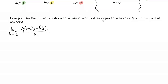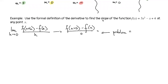If we just plug in zero for H right now, what happens to my fraction? We'll get F of X plus zero minus F of X over zero. And when we divide by zero, that's a problem. So because we can't just plug in zero, we're going to do some algebra first, and then at the end, we're going to plug in zero.